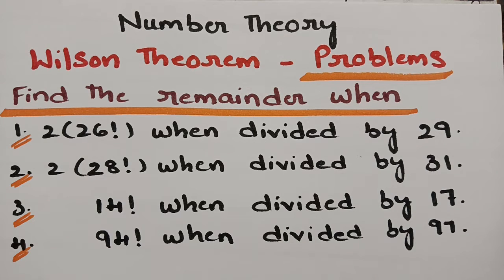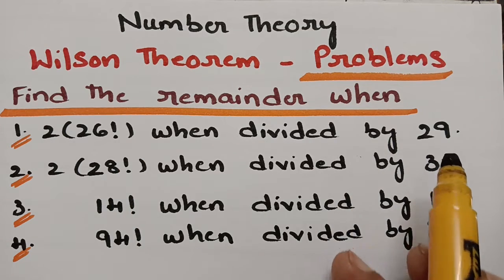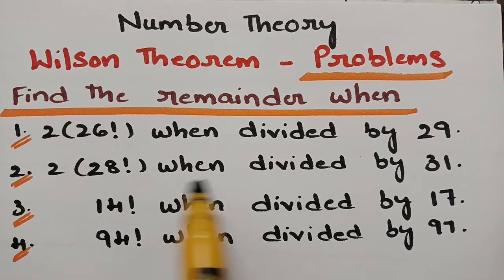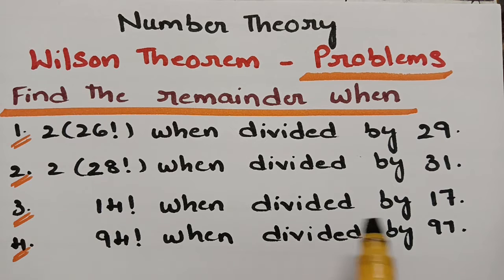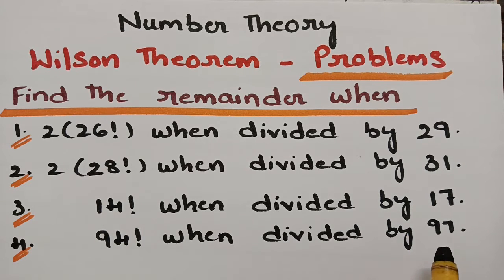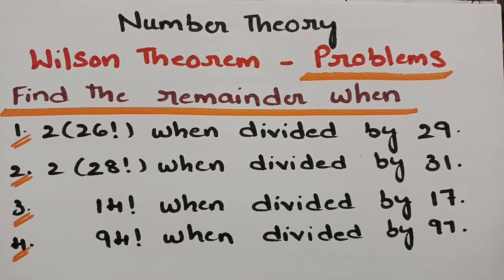Let's get started with today's topic: problems related to the Wilson theorem. We have to find the remainder when 2 × 26! is divided by 29, when 2 × 28! is divided by 31, when 14! is divided by 17, and when 94! is divided by 97. These are all important questions related to the Wilson theorem, very helpful for MCS, BTEC, BSE, and any degree students.